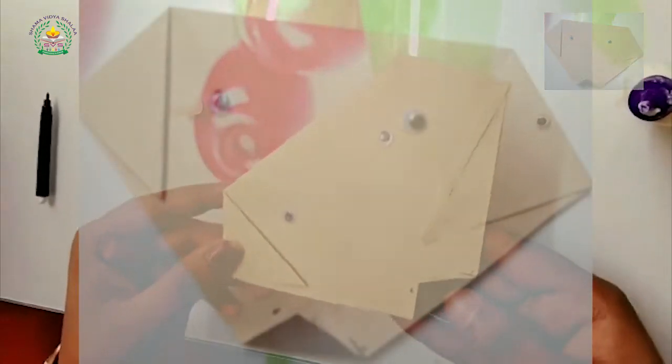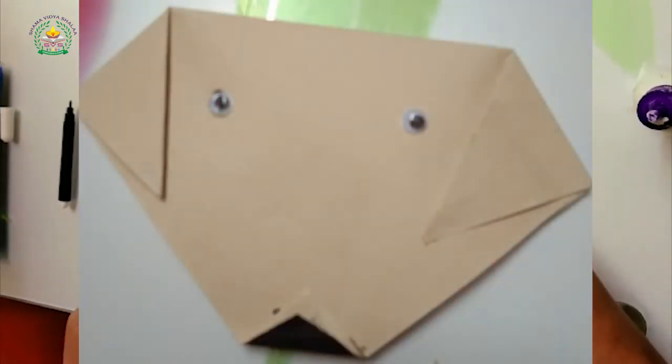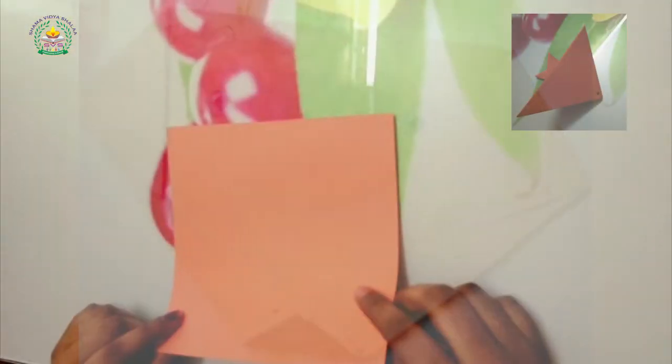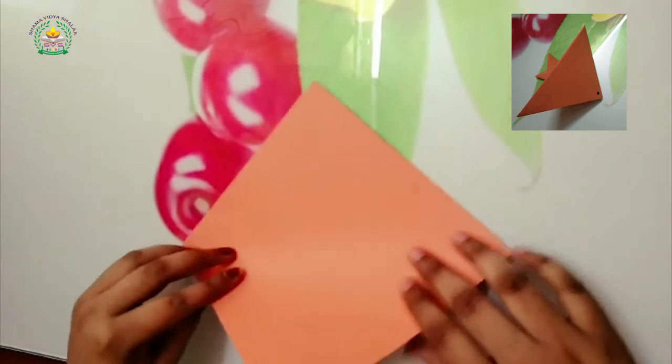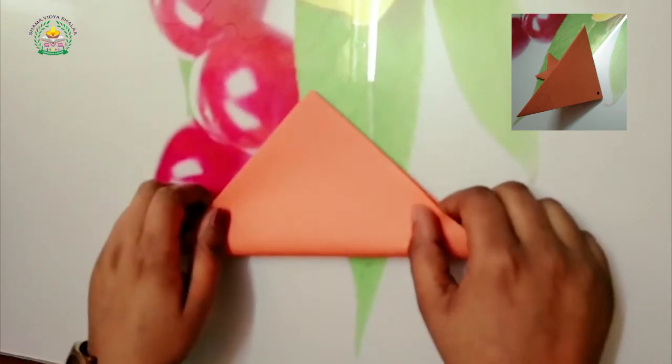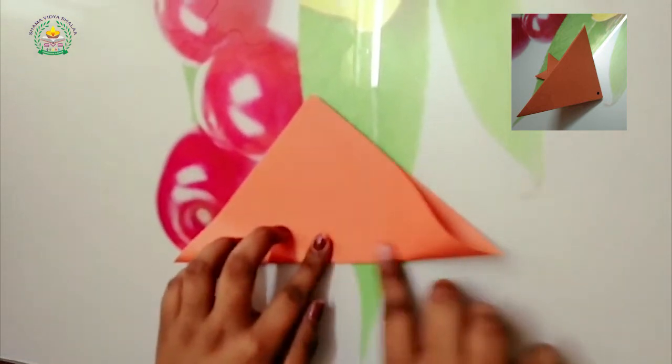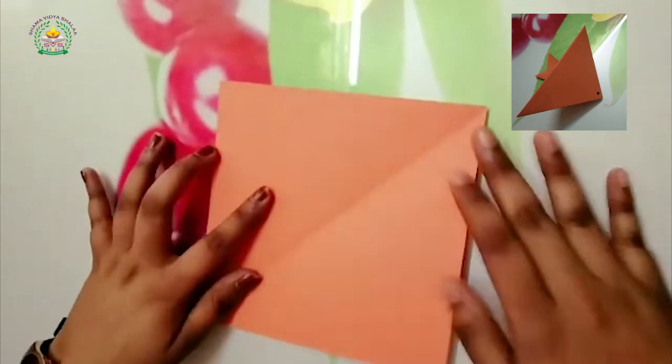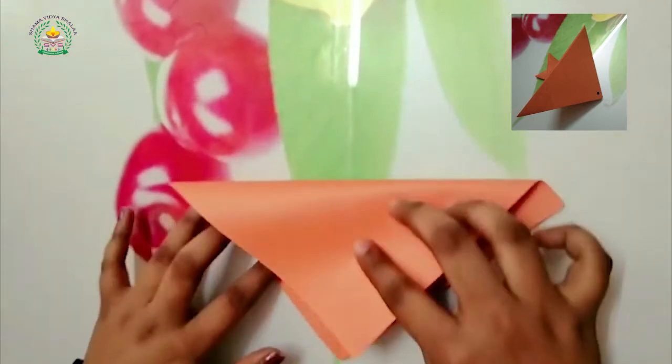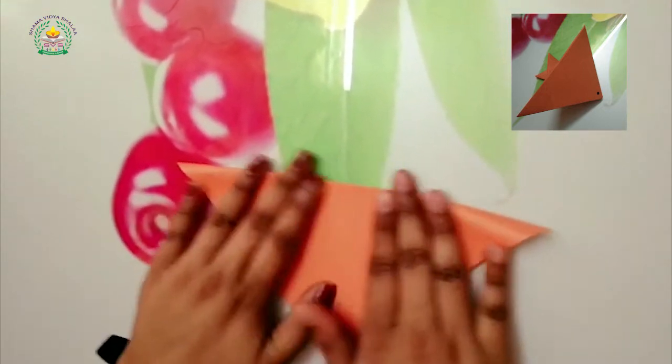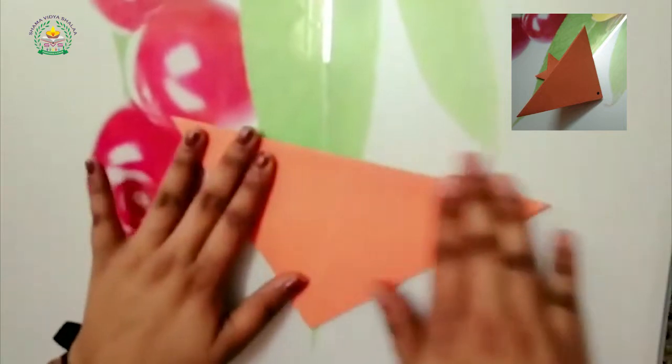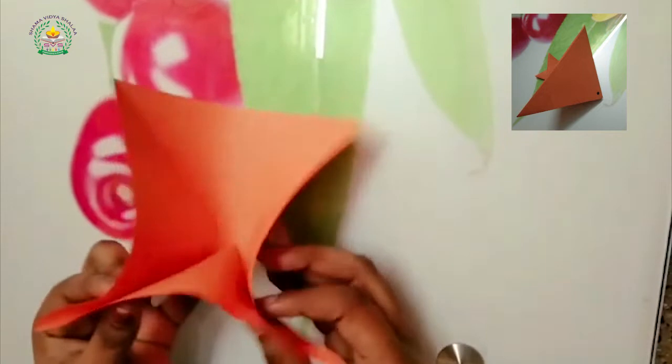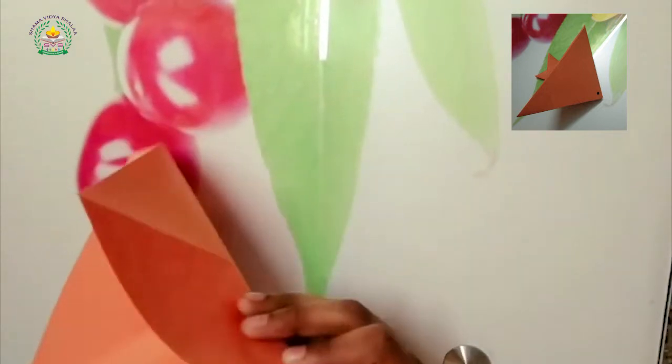Yeah, so now the dog is ready. Next, now I am going to do fish. So first fold it like this. Then I am going to open it and fold it opposite side, then now press it like this.